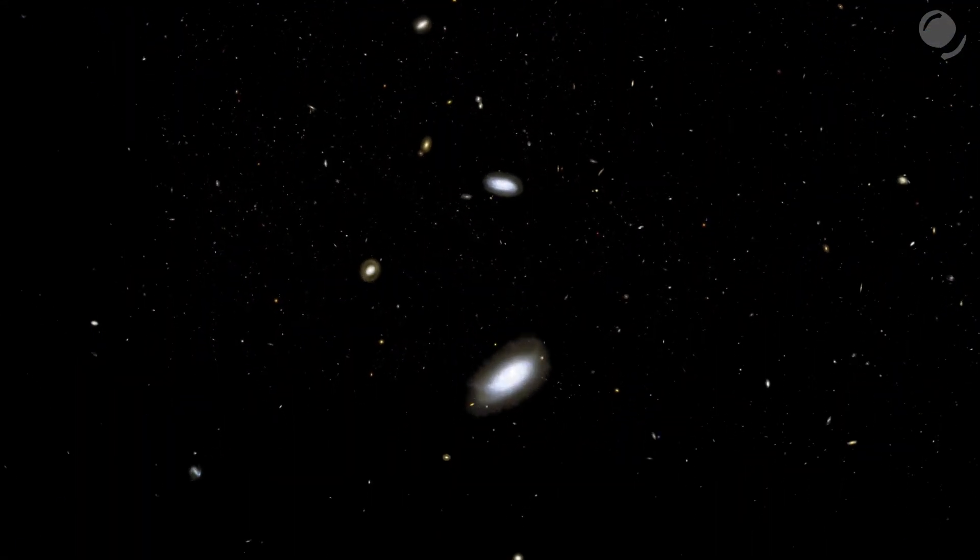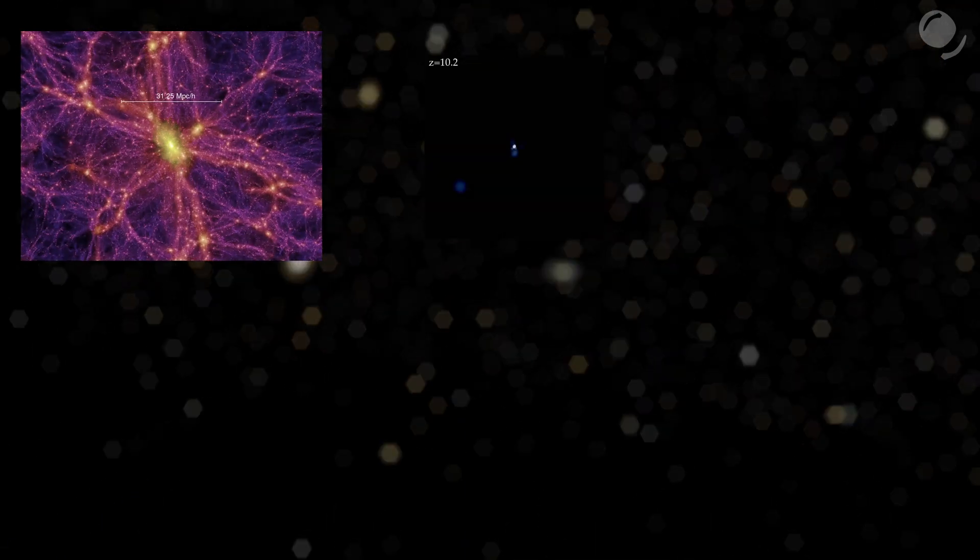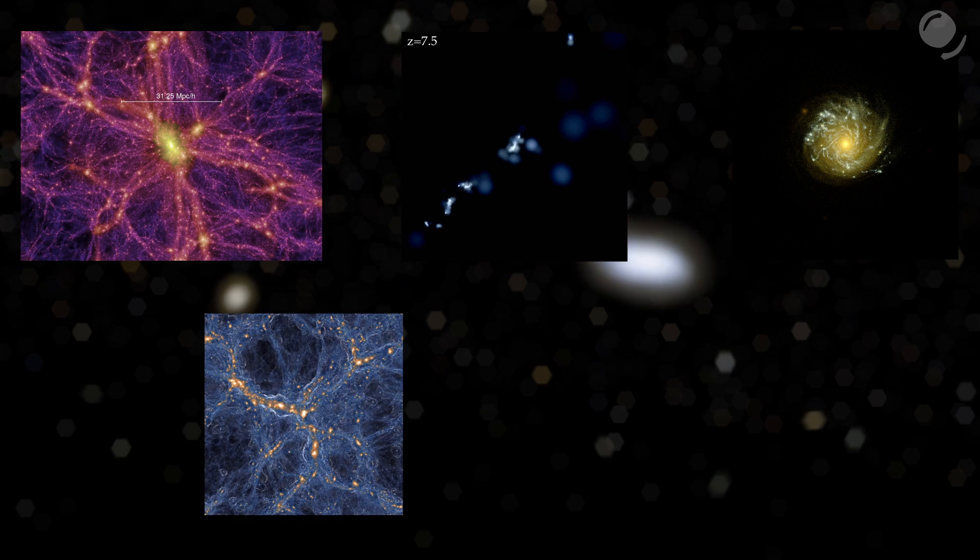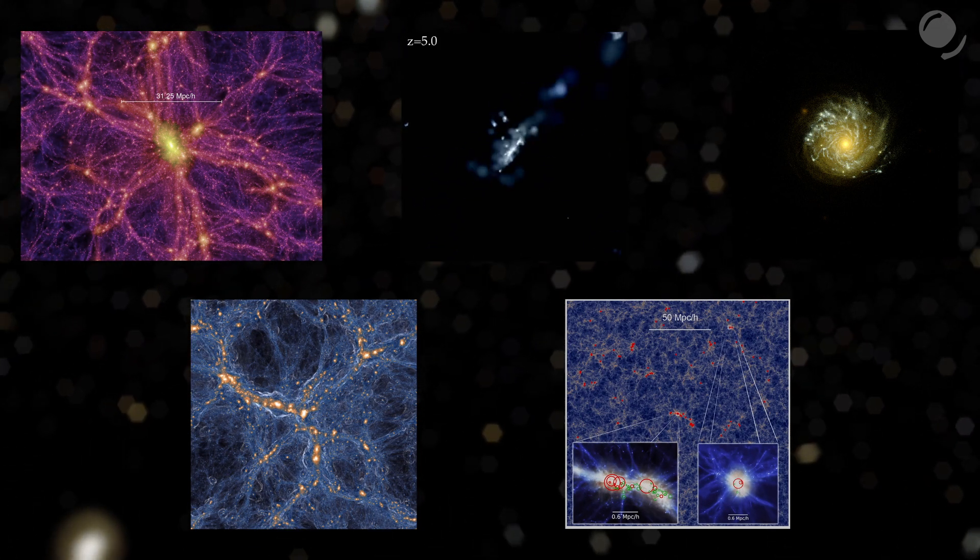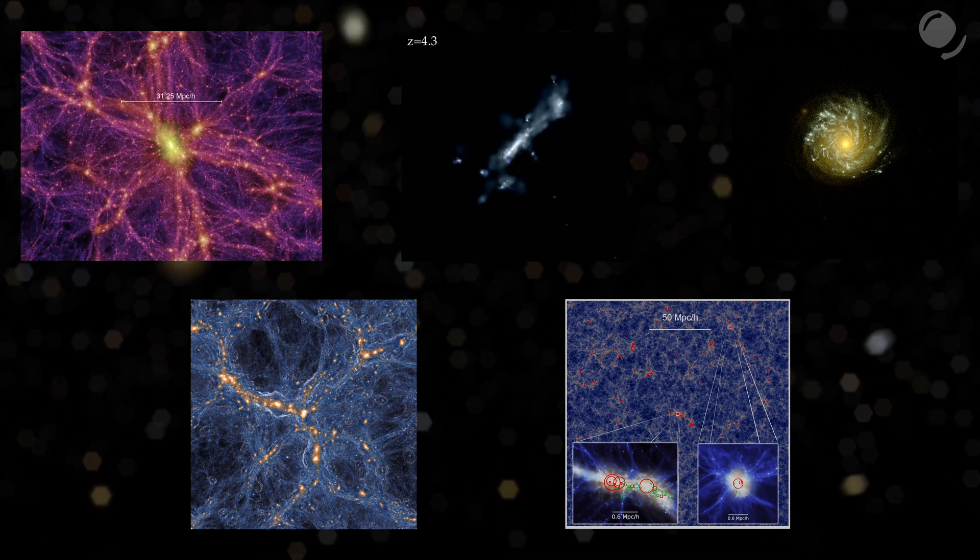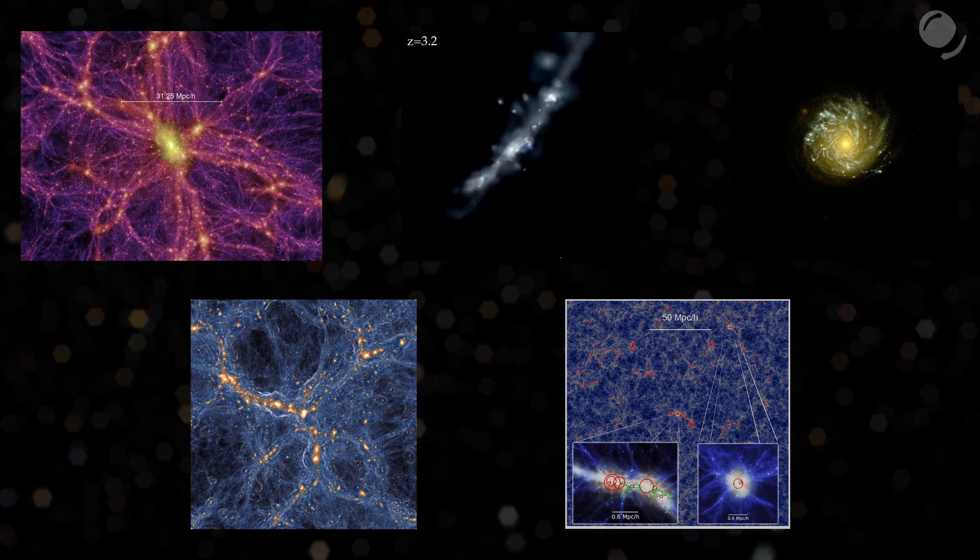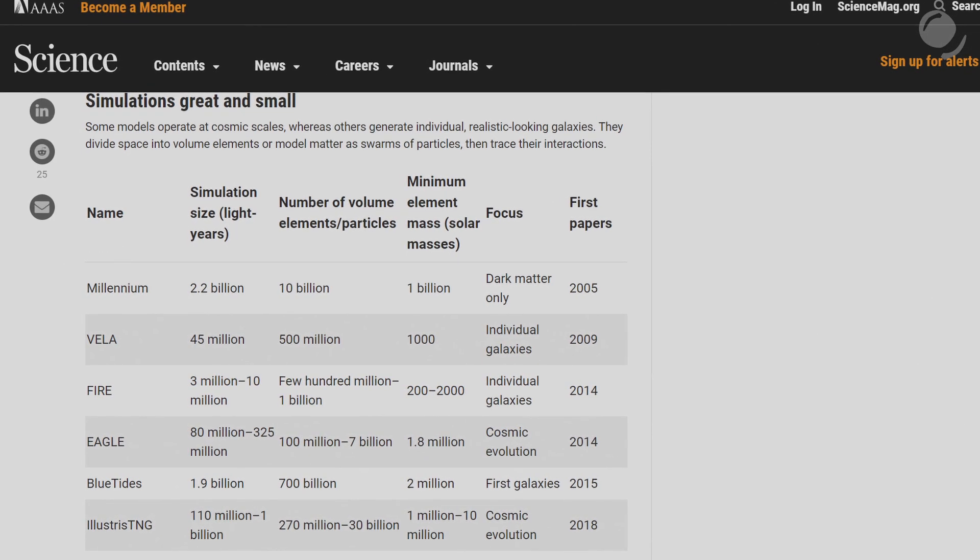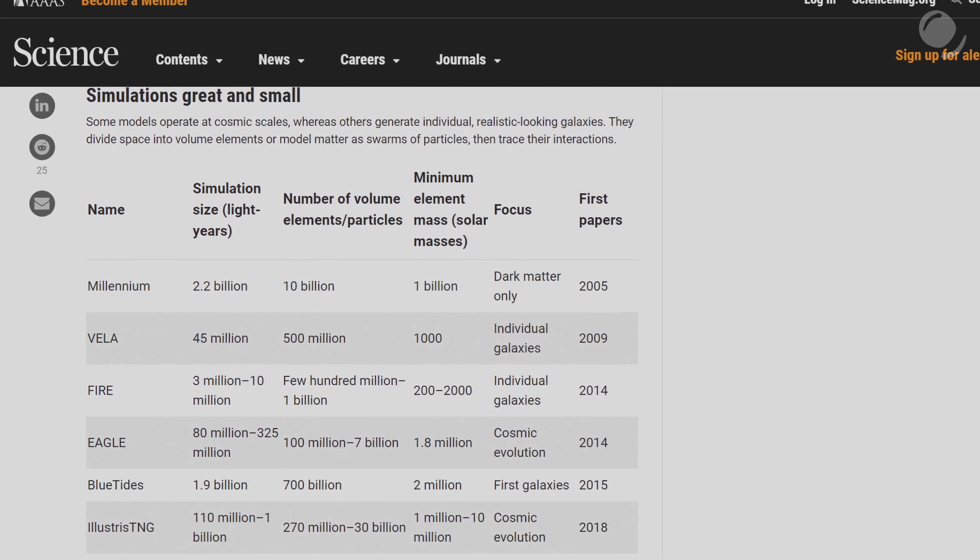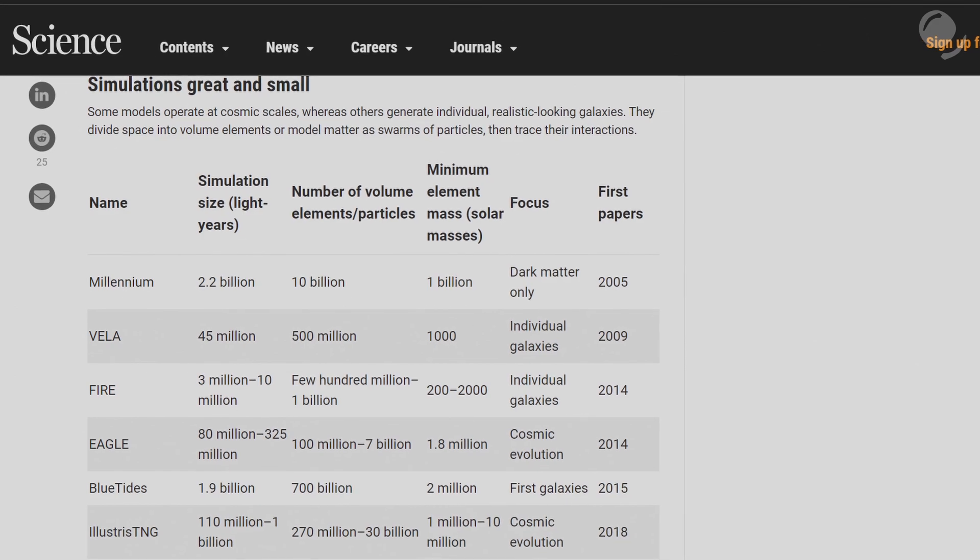But actual scientific simulations of large-scale structure of the universe, such as Millennium, Fire, Vila, Illustris, Blue Tides and others, that is a completely different story. They contain tens of millions to hundreds of billions of elements or particles. They take supercomputers to run them. Some of those simulations are relatively new and even they have their limitations.